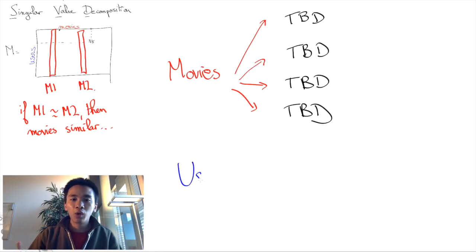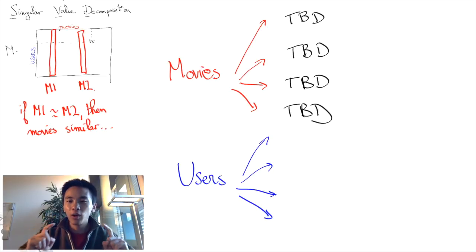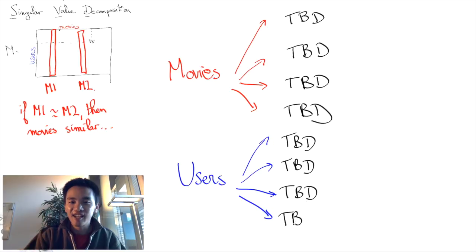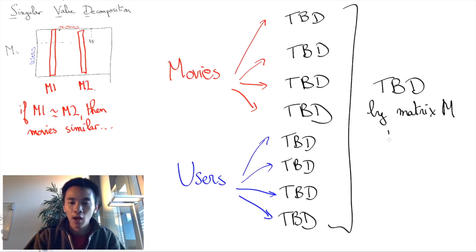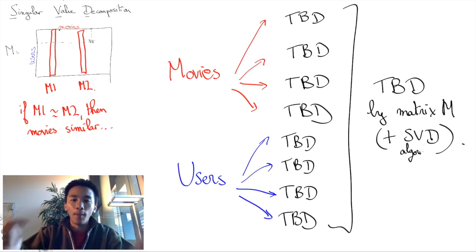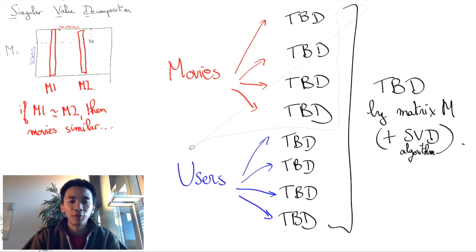Similarly, we'll want to group our users into categories of users, and crucially, the way these groupings are going to be chosen will be data-driven. That is, the movie and the user categories will be computed from our matrix.